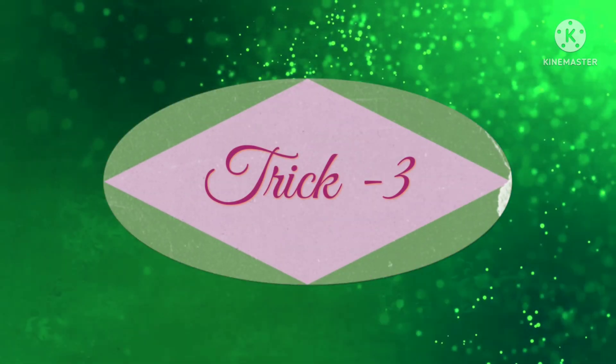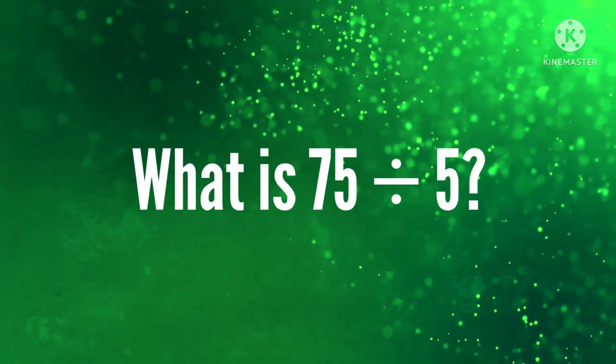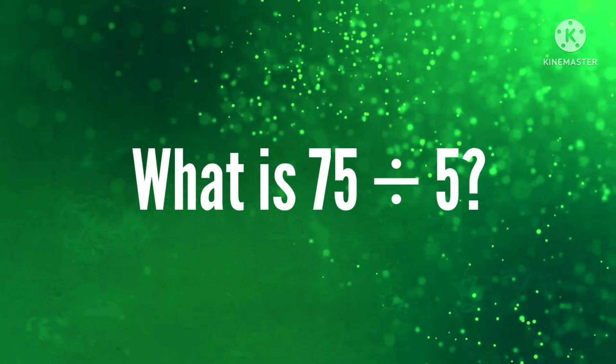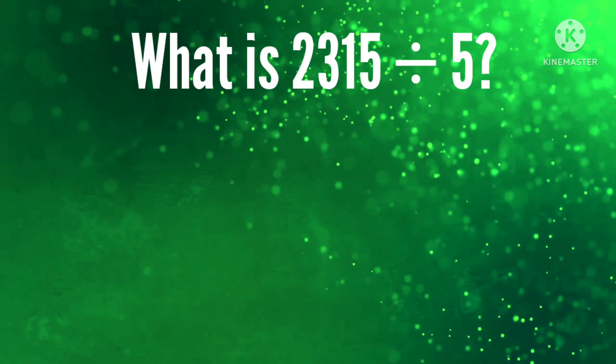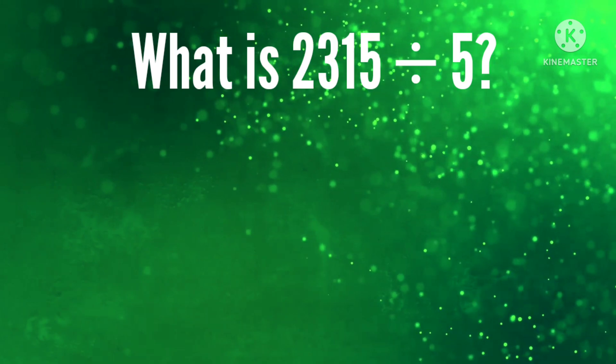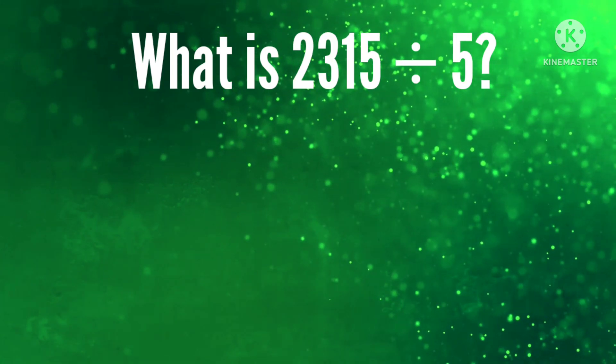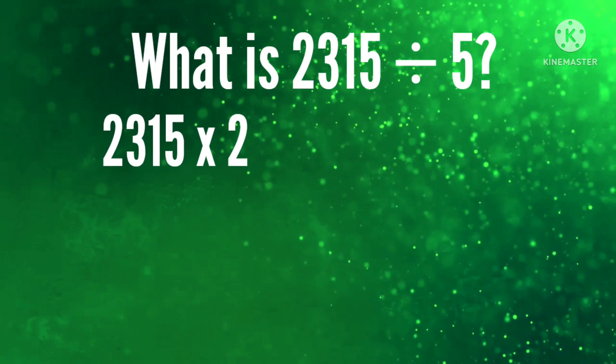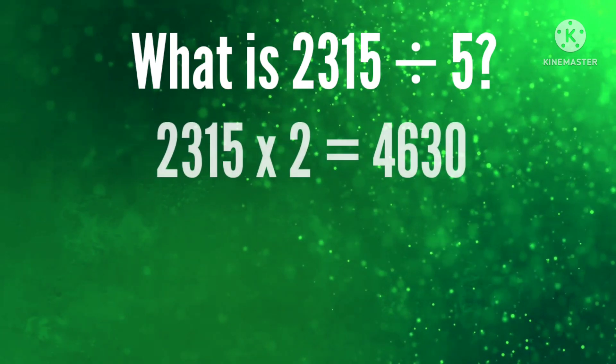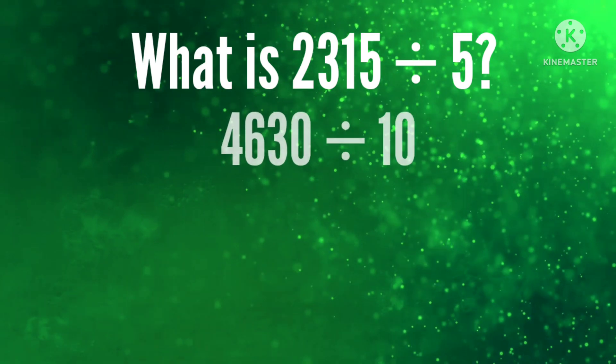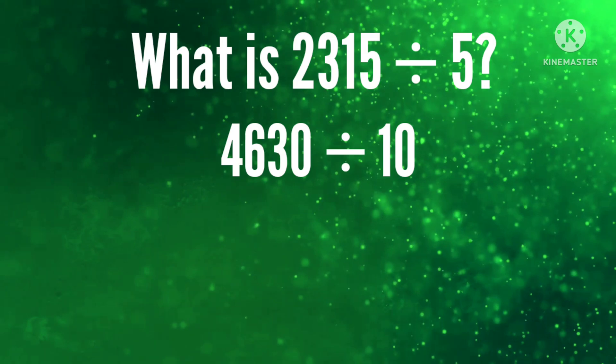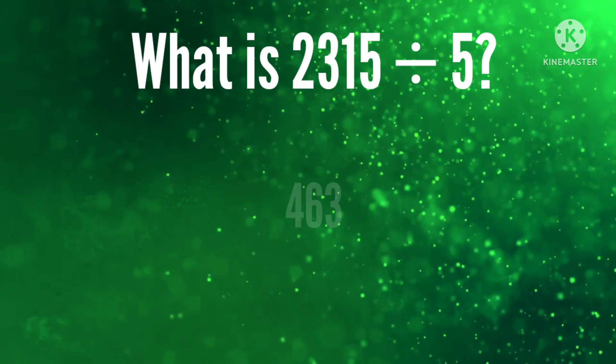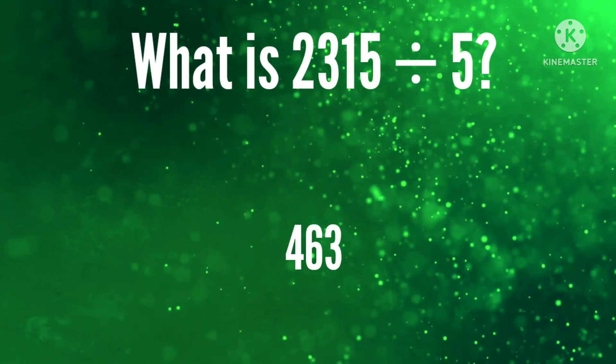Trick number 3: Division by 5. What is 75 divided by 5? Yes, 15. What is 2315 divided by 5? Let's see the trick. First, multiply the number by 2. Answer is 4630. Then divide the result by 10. 4630 divided by 10. Yes, answer is 463.